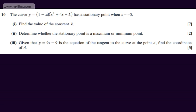If the curve has a stationary point, dy by dx, the gradient function, will be equal to 0. I'm going to expand the brackets, differentiate the function, and substitute in x equals minus 3. If I set that equal to 0, I can solve for k. So let's go ahead and expand the brackets and collect like terms.